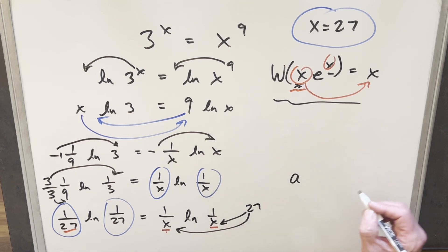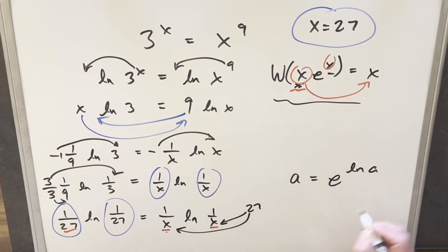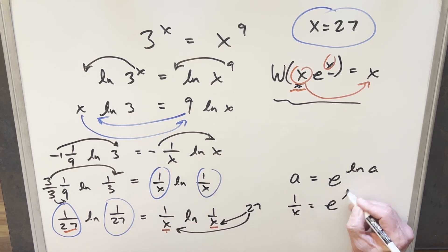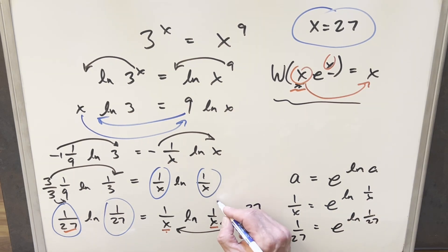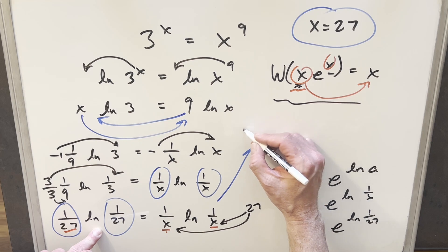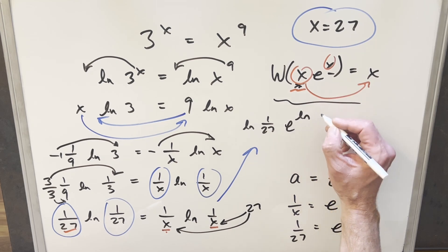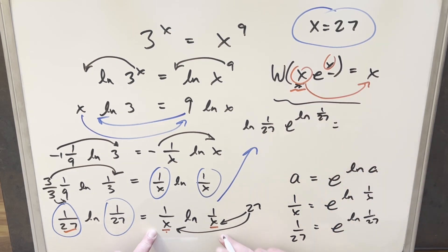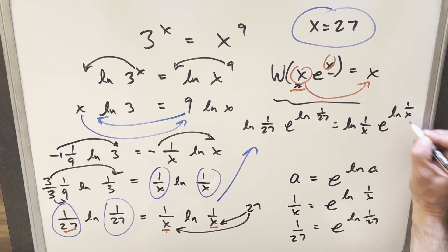I'm going to use the tool that any value a can be written as e^(ln a). I want to use this on the 1/x and the 1/27. So for 1/x, I can write this as e^(ln(1/x)), and for 1/27, I can write that as e^(ln(1/27)). Applying this to our problem: on the left side, I'll reorder to get ln(1/27)·e^(ln(1/27)), and on the right side, ln(1/x)·e^(ln(1/x)).